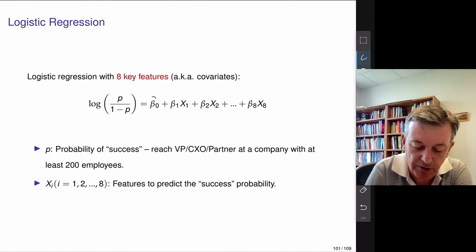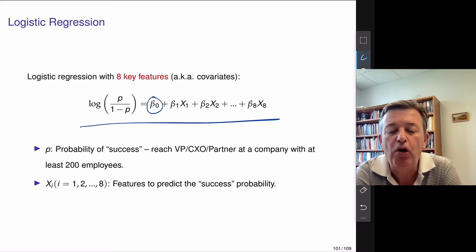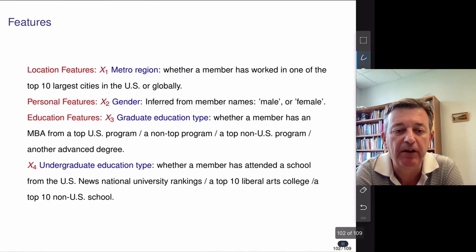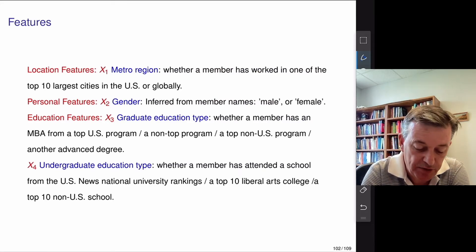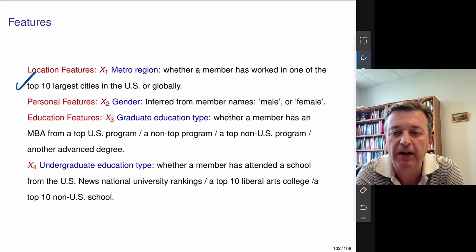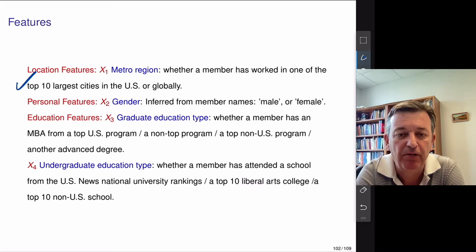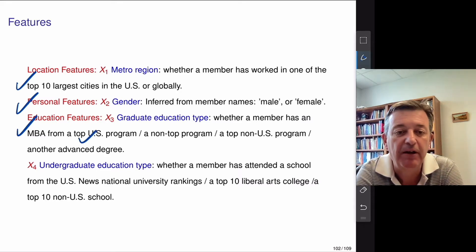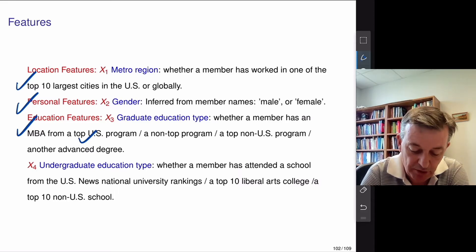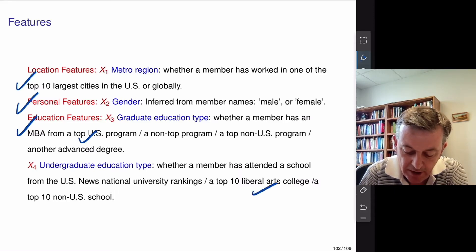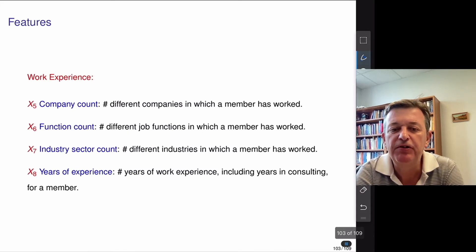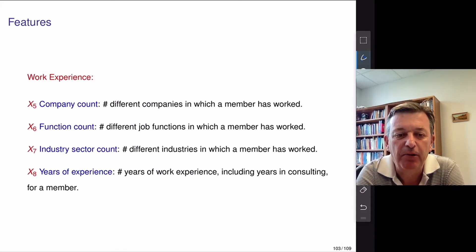So, again, let me just remind you of logistic regression. This time, we'll include an intercept. Your log odds of becoming an executive is a bunch of eight variables. We want to work out your success probability. What are the variables or features? Which city, metro region? We're going to see that New York, if you're willing to work in New York, you've got bigger odds. We're going to assess the gender effect. We're going to assess the education effect. Does it matter if you go to get an MBA from a top US program or not? We're going to look at your undergraduate type. Did you go to liberal arts? Did you go to a top non-US school? We'll look at that as well.